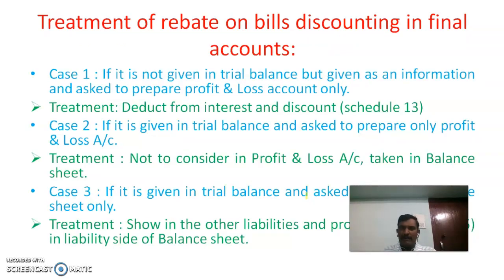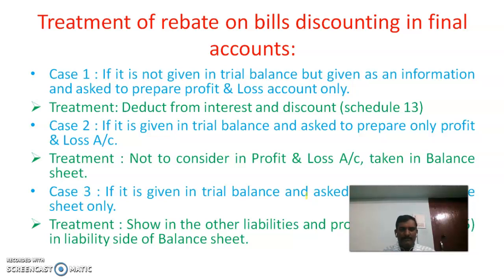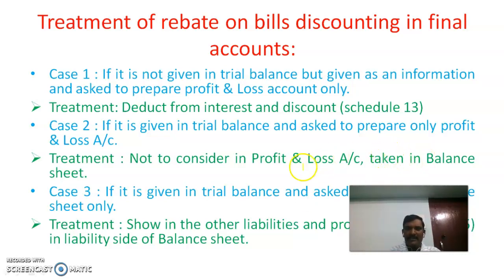How is rebate on bills discounted treated in final accounts? There are six cases. Case 1: if it is not given in the trial balance but given as additional information and only profit and loss account is to be prepared, the treatment is to deduct it from interest and discount on Schedule 13. Case 2: if it is given in the trial balance and only the profit and loss account is to be prepared, it is not considered in the profit and loss account — it is directly taken to the balance sheet.